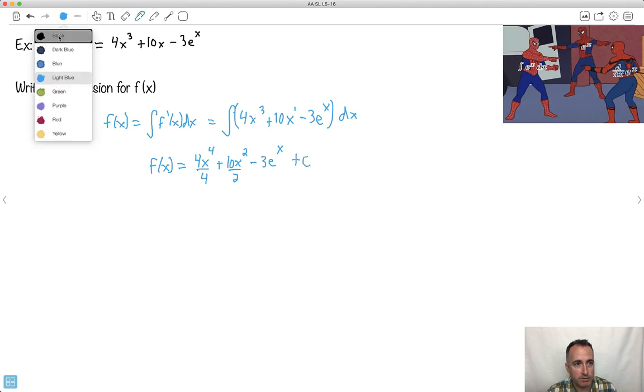Well, we'll just do a little bit of simplifying here. The 4s cancel out. That's nice. The 10 over 2 cancels out to give me a 5. So I have f of x equals, it's going to be x to the 4th, x to the 4th plus 5x squared minus 3e to the x, all that plus C. And I should be done.